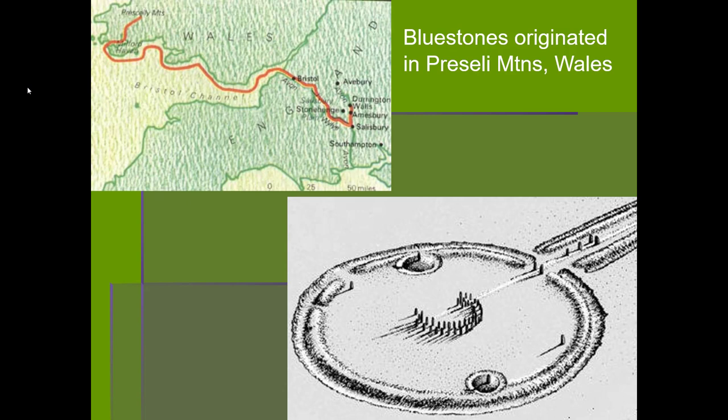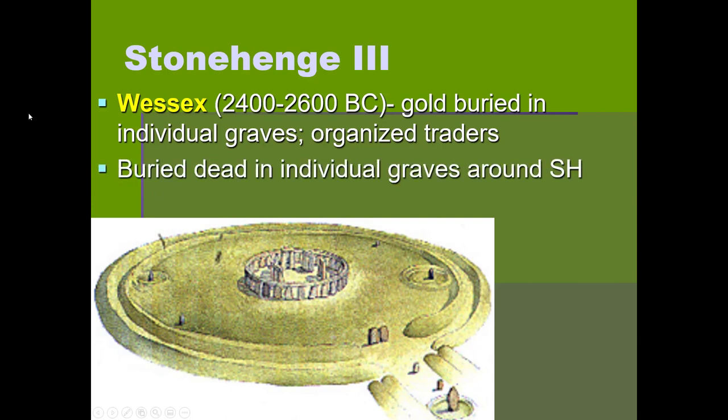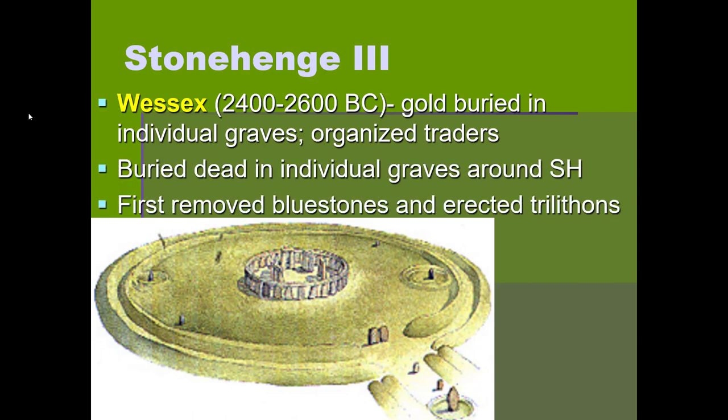Stonehenge 3 is the pinnacle of development for Stonehenge, accomplished by a group called the Wessex, who lived in the area from about 2400 to 2600 BC. They seem to be the most sophisticated — the most cosmopolitan — group to live at Stonehenge. They were buried in individual mounds rather than mass graves, though all three cultures also cremated their dead. The closer the mounds were to Stonehenge, the wealthier the people buried there, and some were buried with gold objects.